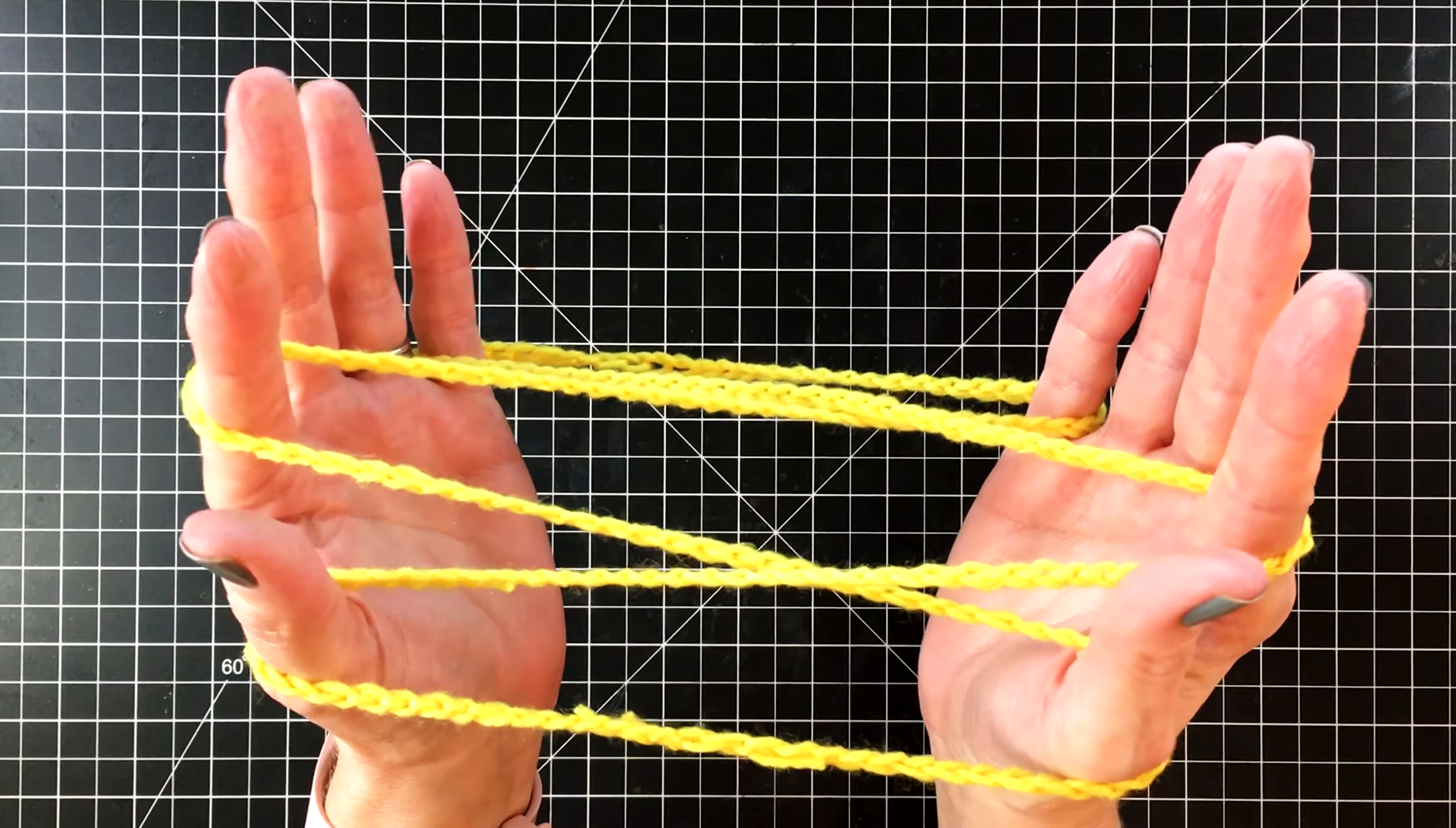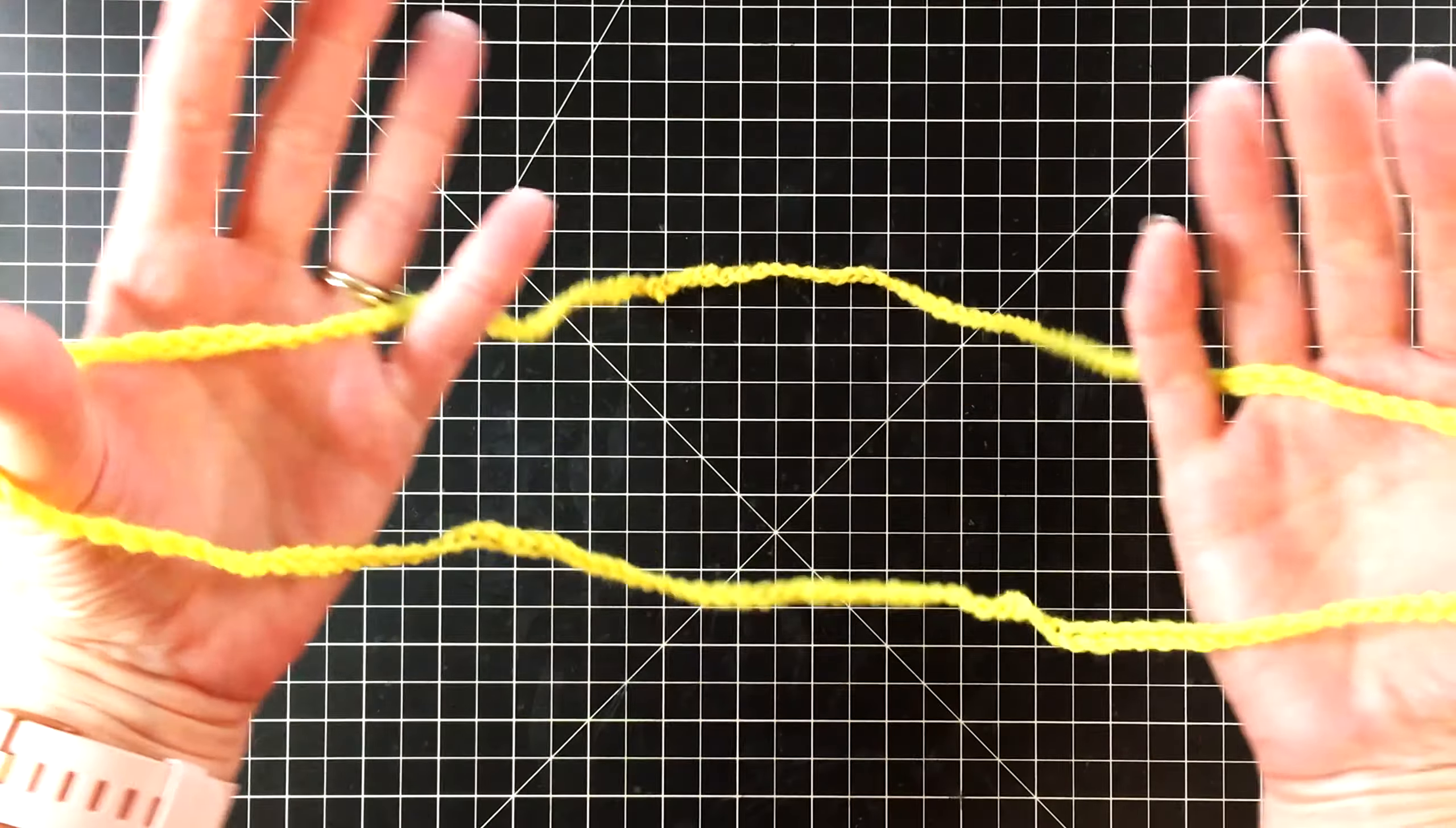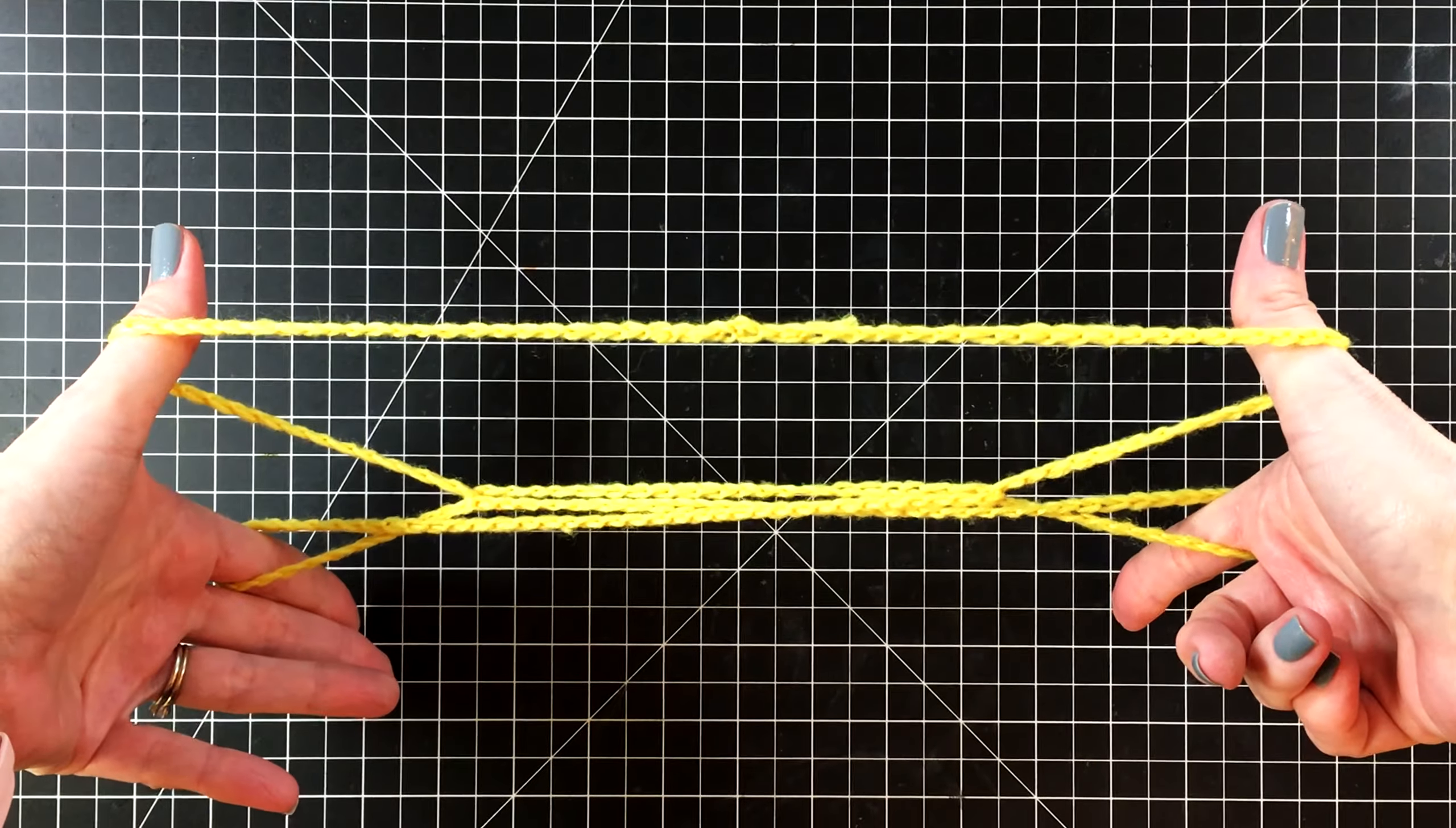And now comes the kind of tricky part. You're going to put your thumbs over the yarn and then under. And then you need to let go of the bottom string. And that can be kind of tricky. Next, let go of the yarn around your pinkies. And here is your cup and saucer. I'm going to turn it so you can see it better. Let's do that one more time. Your thumb and pinky will be inside the circle. Use your pointer fingers to draw out the yarn. Your thumbs will go under and drop the bottom string. And then drop the string around your pinkies. And there again is the cup and saucer.